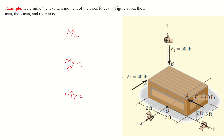First, we will calculate the moment about the x-axis. A force which is parallel to an axis cannot produce a moment about that axis. F1 is acting in the y-direction and has a perpendicular distance with the x-axis equal to 2, which is in the z-direction. F1 will tend to rotate anti-clockwise, so the contribution is 60 multiplied by 2.